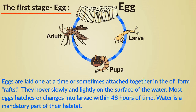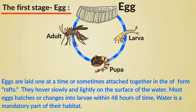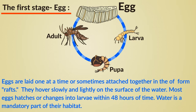Eggs are laid one at a time, or sometimes attached together in the form of rafts. They hover slowly and lightly on the surface of the water. Most eggs hatch or change into larvae within 48 hours. Water is a mandatory part of their habitat.